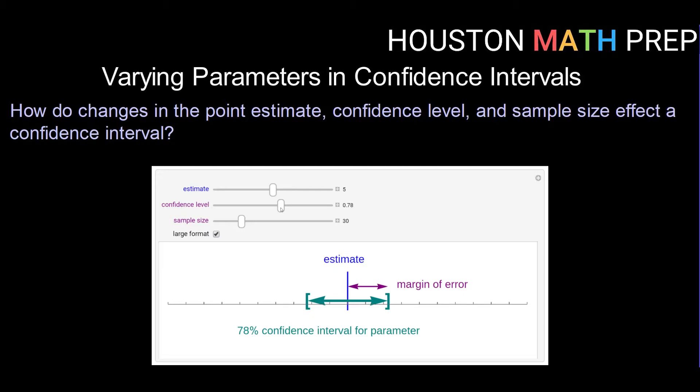And that is because the wider the interval or the wider the net, the more confident we can be that we have in fact captured the true parameter. So if I increase my level of confidence, we can see that our net or our confidence interval gets wider. And if I decrease my level of confidence, I can see that my net or my confidence interval decreases or gets narrower.